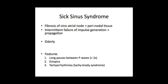Sick sinus syndrome is predominantly a condition of the elderly and is characterized by fibrosis of the sinoatrial node and often associated fibrosis of perinodal tissues. This leads to intermittent failure of impulse generation and can also cause failure of propagation due to involvement of perinodal tissue. The features to look for are long pauses between P waves, typically greater than two seconds. Patients may also have a preponderance of ectopics and are predisposed to tachyarrhythmias — for this reason, sick sinus syndrome is often referred to as tachybrady syndrome.